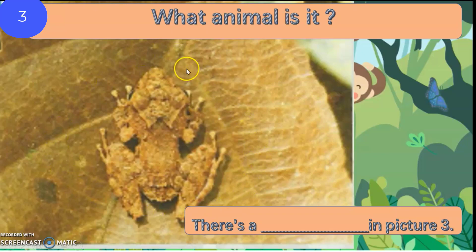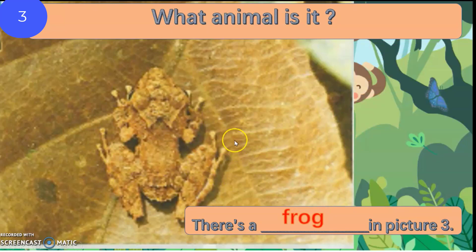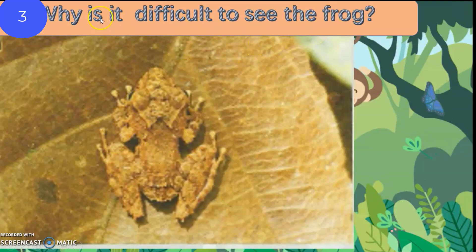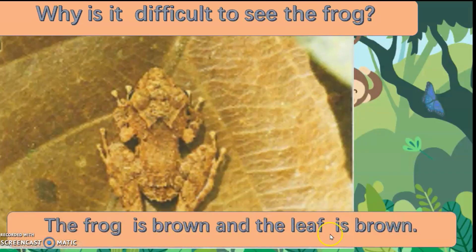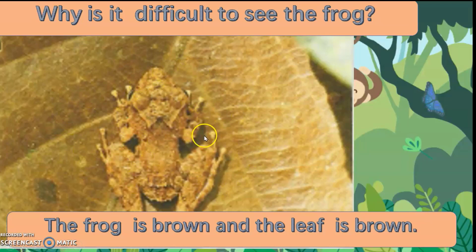What animal is it? Very clear here. There is a frog in picture three. Why is it difficult to see the frog? Because the frog is brown and the leaf is brown too. The frog is brown and the leaf is brown. The frog blended in with the surrounding, so it camouflaged itself.